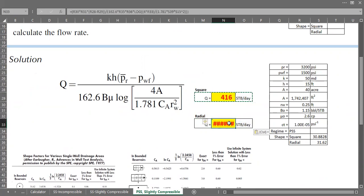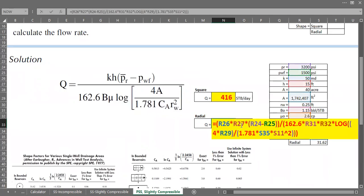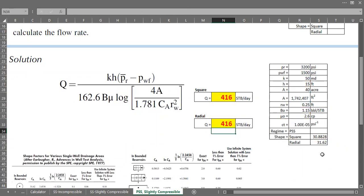And then here I want to copy everything here and paste it. And paste it here, it should be the same 416, but now I want to change from square shape to radial shape. So I want to take this one and place it here, 31.62.